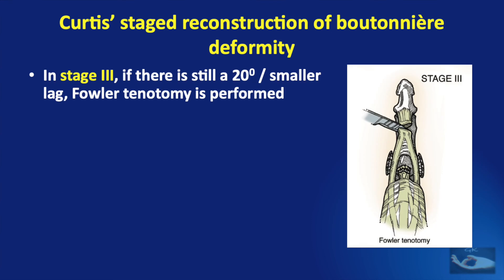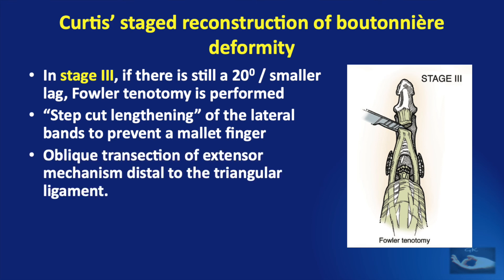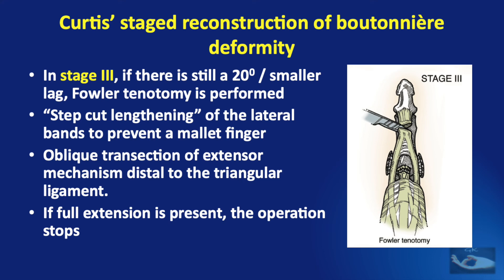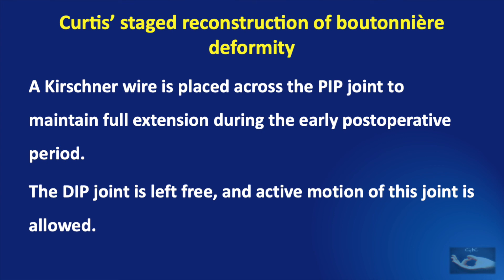But if after Stage 2 there is still a 20-degree or lesser lag, Stage 3 is done: a Fowler's tenotomy is performed — either a step-cut lengthening of the lateral bands to prevent an overt mallet finger, or an oblique cut of the extensor. If full extension is then present, the operation stops. If extensor lag persists, the central tendon is dissected free and advanced approximately 4 to 6 mm into a drill hole in the dorsal base of the middle phalanx, and the lateral bands are slackened and sutured to the central tendon. At the end of every step, if extension is achieved, a K-wire is passed across the PIP joint to maintain full extension during the early post-operative period, and the DIP joint is left free for active motion.